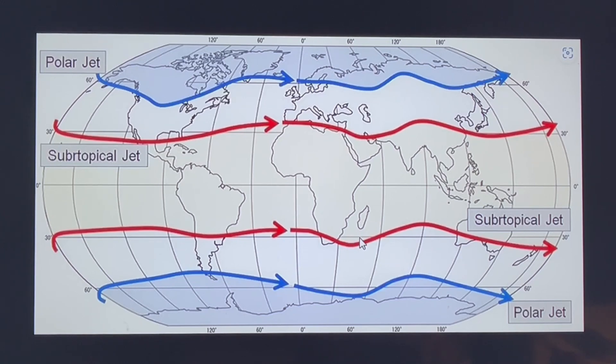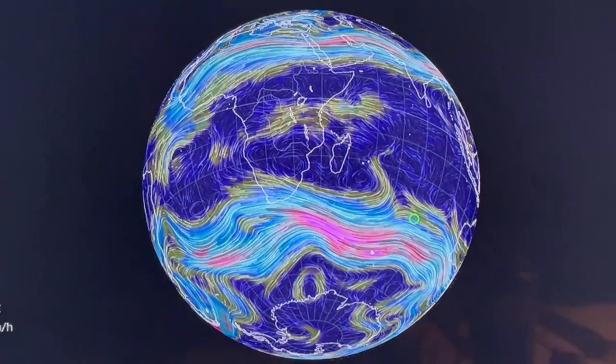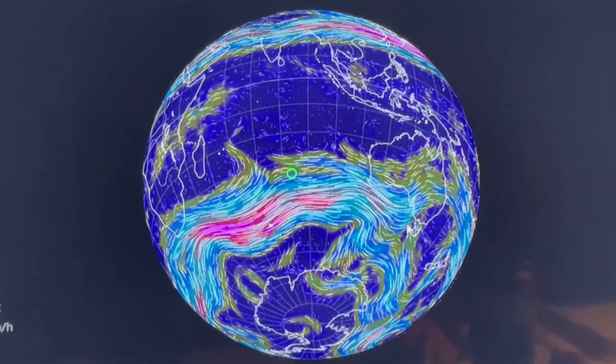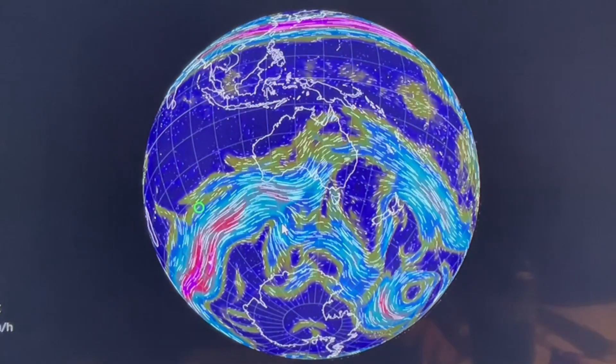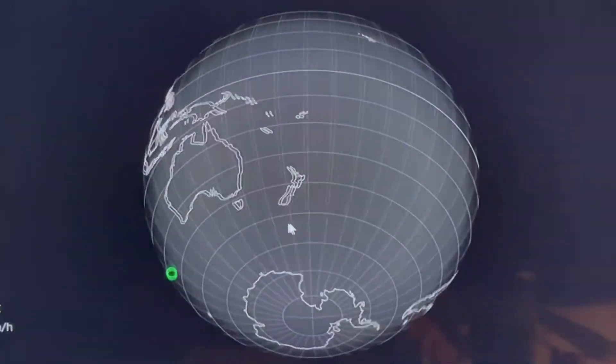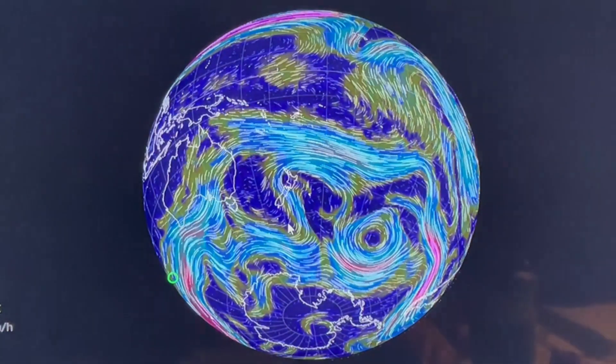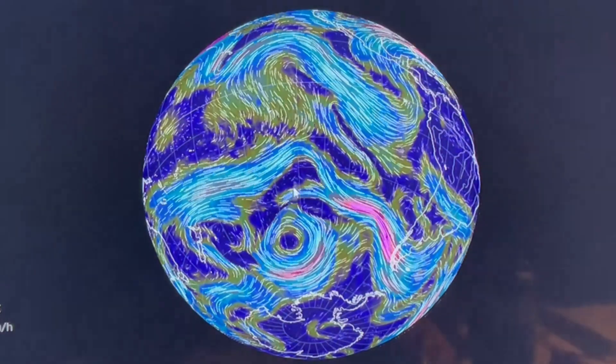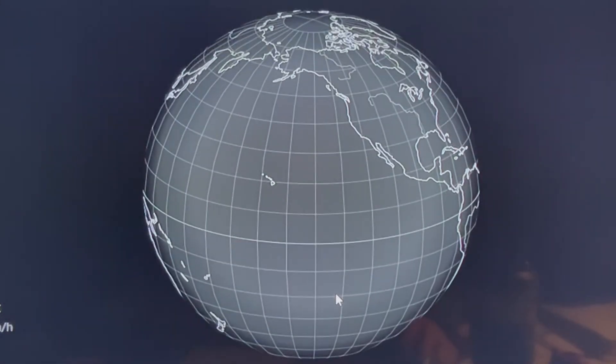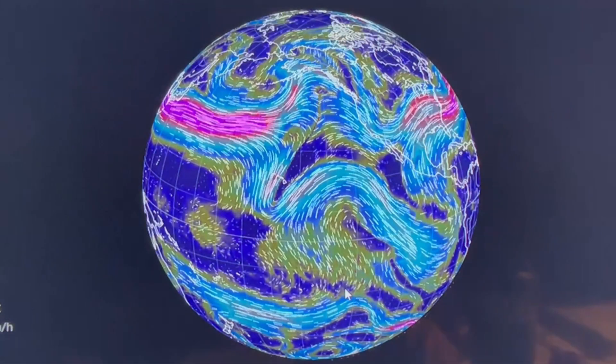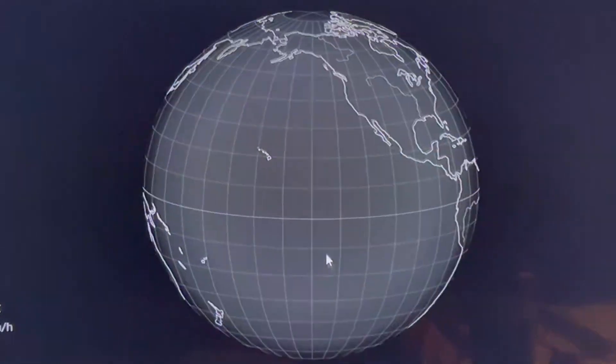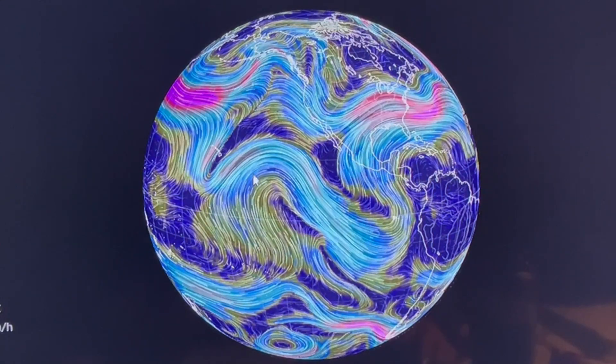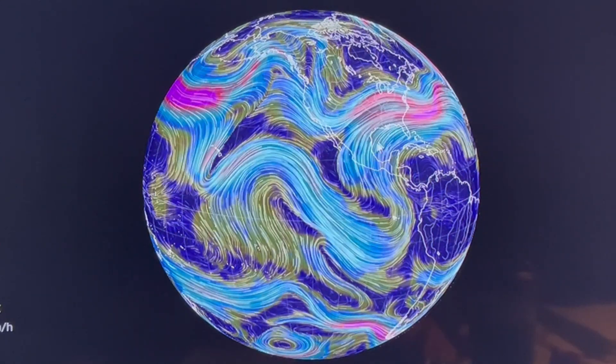Now let's go to our current jet streams. I'm going to start off in the southern hemisphere. Now we're going to shift up to the northern hemisphere and what I call snakes and ladders jet streams.